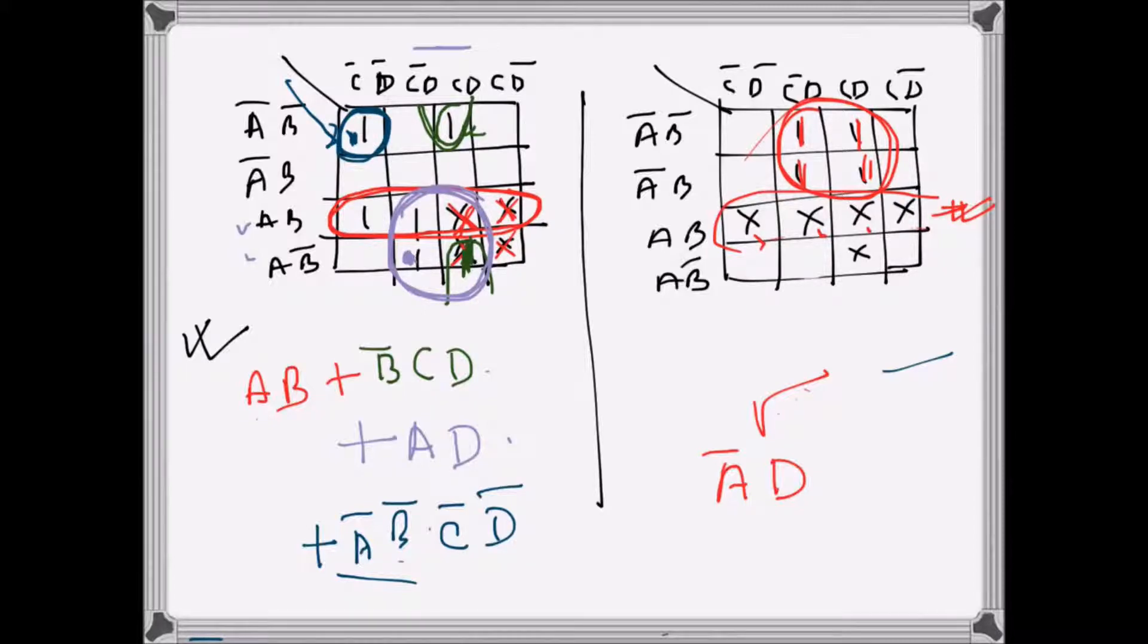And if making any don't care a one enables us to have a bigger group, that's fine, but once we have considered all the ones at least once, that's it. We don't have to make another group, an extra group. So yeah, that's what it is. I hope I have been able to explain it properly.